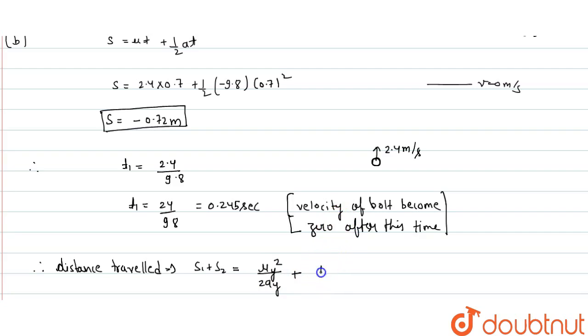v² upon 2a plus total distance when velocity is 0, plus half g t minus t_not whole square.